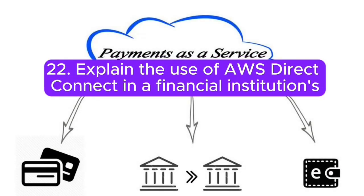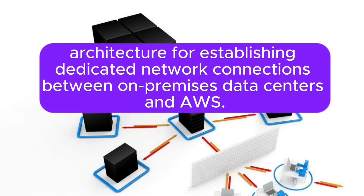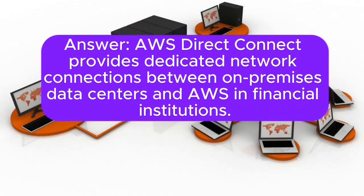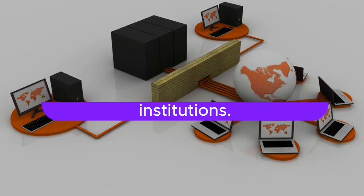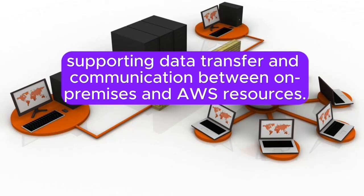Question 22: Explain the use of AWS Direct Connect in a financial institution's architecture for establishing dedicated network connections between on-premises data centers and AWS. Answer: AWS Direct Connect provides dedicated network connections between on-premises data centers and AWS in financial institutions. It ensures secure, high-performance, and consistent network connectivity, supporting data transfer and communication between on-premises and AWS resources.